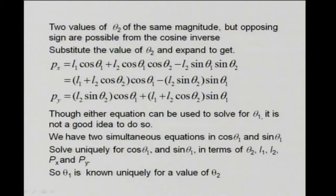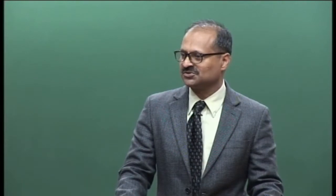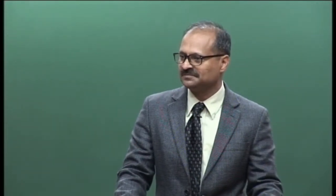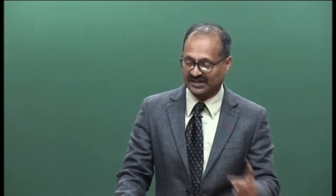Using a single equation to solve for theta1 is not a very good idea. If you substitute theta2 into one equation, you get something like: constant × cos(theta1) + constant × sin(theta1) = constant. You know how to solve this since your entrance exam preparation, but the substitution involves another cosine-inverse or sine-inverse, which again gives two solutions. Can we do better?